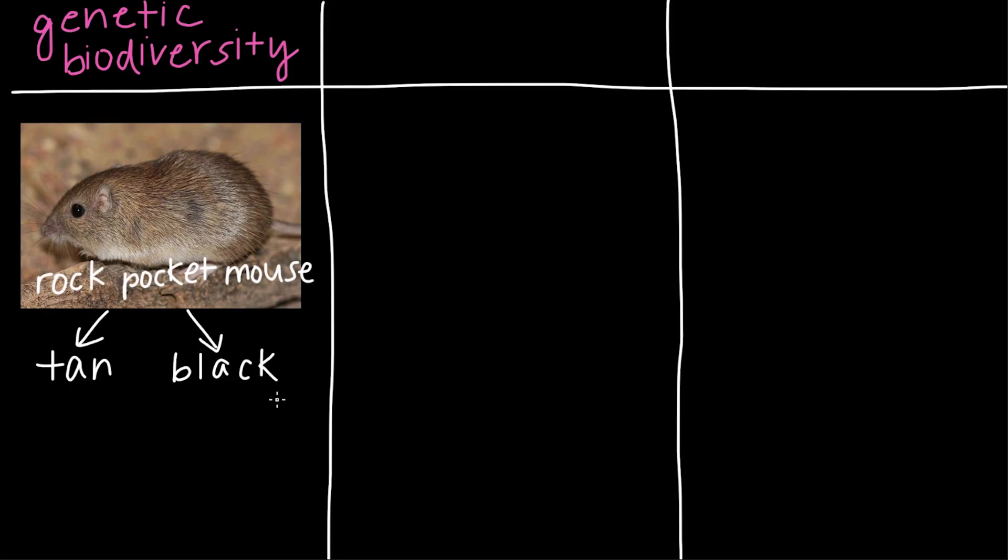And what's even more awesome is the fact that these colors, tan and black, have come about due to natural selection. So scientists have found that there are more black colored rock pocket mice in places with dark blackish lava rock, while there are more tan colored rock pocket mice in lighter colored sands. And this makes sense because if you think about it, the mice are hunted from above by predators like birds. So having a coat color that blends into their surroundings would increase their chances of survival.